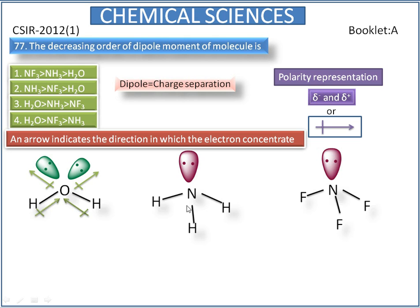In ammonia, nitrogen is the electronegative element and hydrogen is the electropositive element. So the direction of the dipole moves towards nitrogen. In the orbital, the direction of the dipole will be like this.